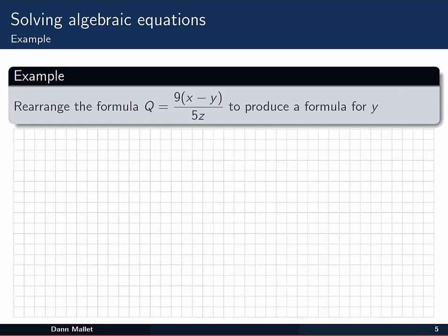What about this one? We want to rearrange the formula Q equal to 9(x minus y) over 5z, to produce a formula for y. Again, we've got an equation, and we're simply asking to solve it for y. We start with Q equal to 9(x minus y) over 5z. What I like to do in this kind of case is get rid of the fraction. To get rid of that fraction, noticing I'm dividing by 5z, I'm going to multiply both sides by 5z to get rid of it.